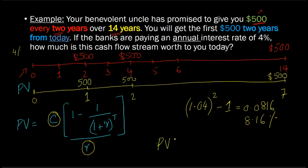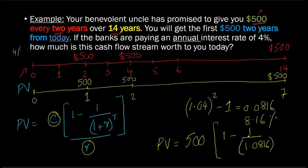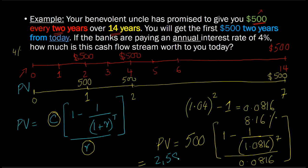To determine the present value, you calculate: PV = 500 × [1 − 1/1.0816^7] / 0.0816. We raise to the power 7 because there are seven such intervals, and we divide by 0.0816 as the appropriate interest rate. This solves out to about $2,589.